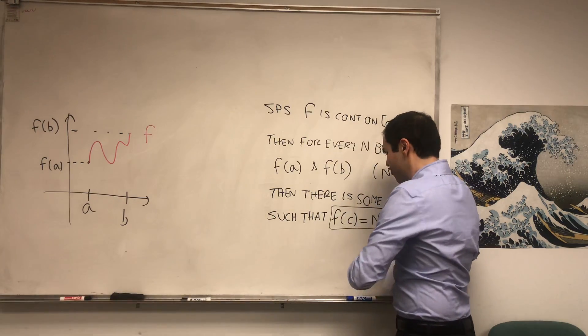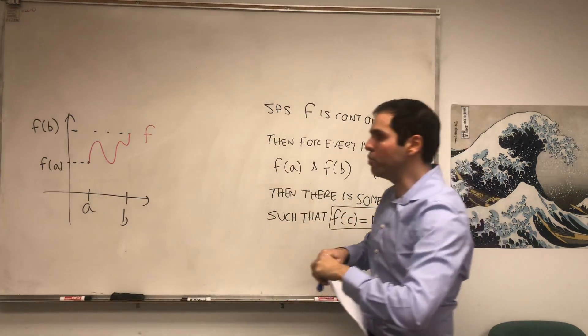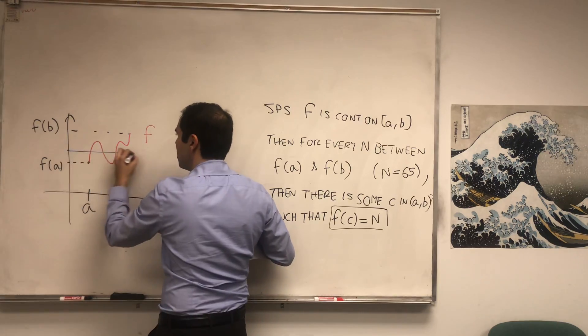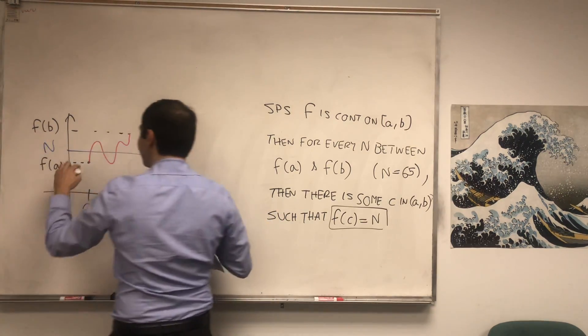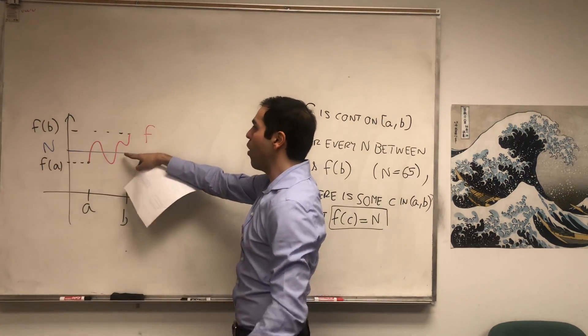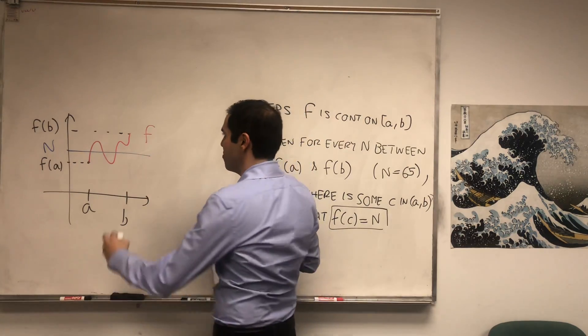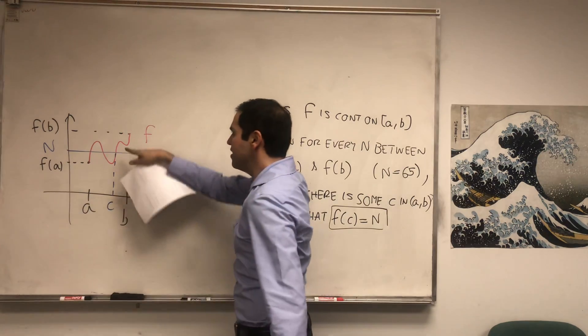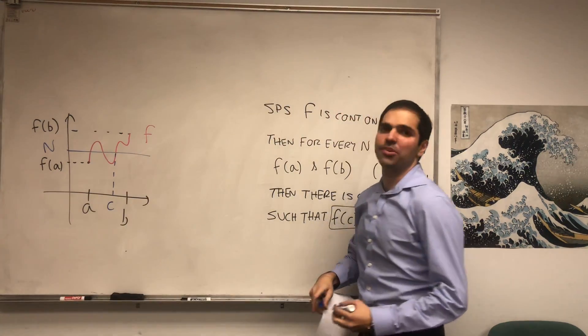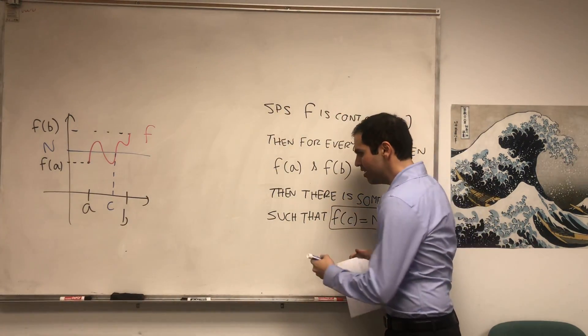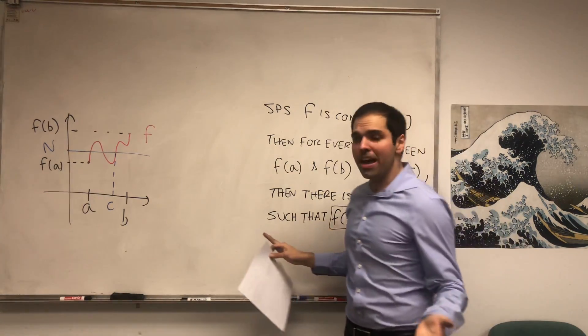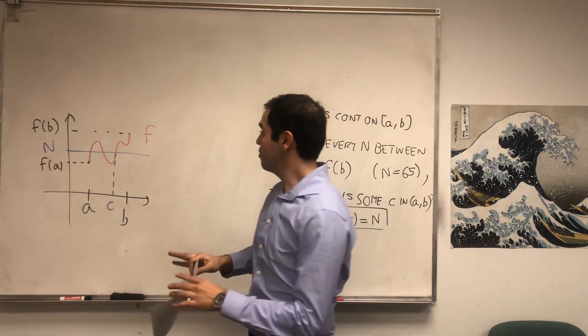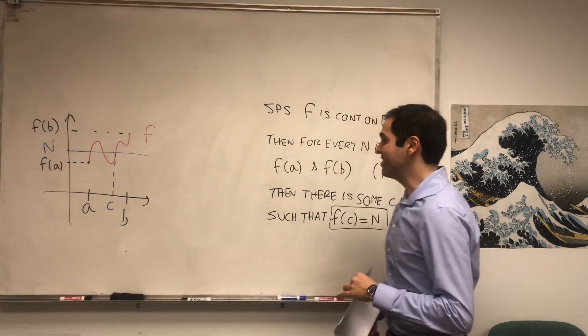Then, no matter which number you pick between f(a) and f(b), you guarantee that f crosses this line at least at some point. In other words, there is always some c such that f(c) equals n. And there might be many of such values, but we guarantee there's at least one.